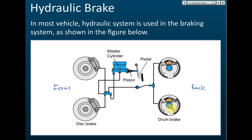For most vehicles, the front brake is the disc brake. There's a disc here and these are the brake shoes. When you press on it, the brake shoes will press on the disc and stop the motion of the disc, therefore stopping the car. This is a disc brake. The brake at the back is the drum brake — front uses disc brake and back uses drum brake. When you apply the force, a small piston pushes the brake shoes to touch the wheel and stop it.